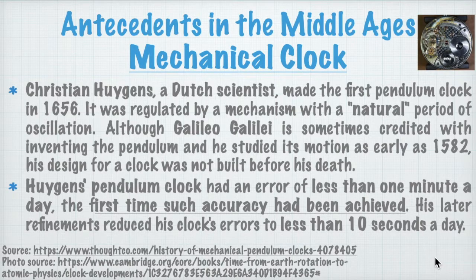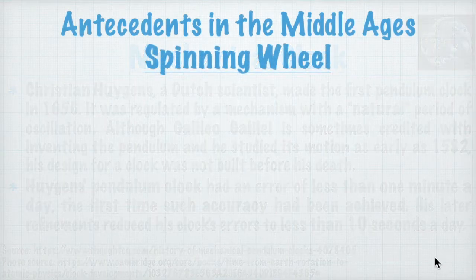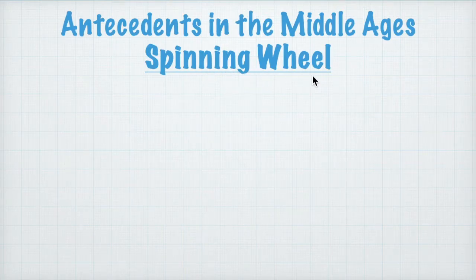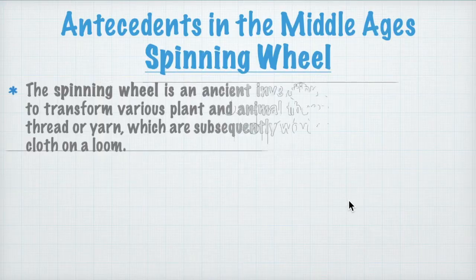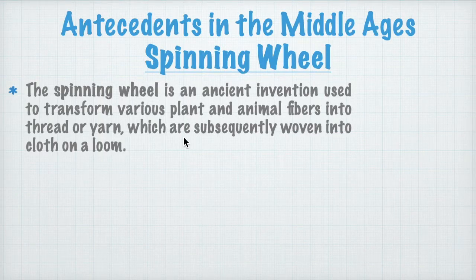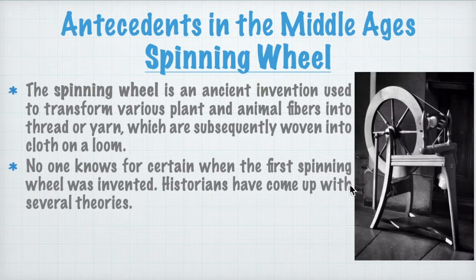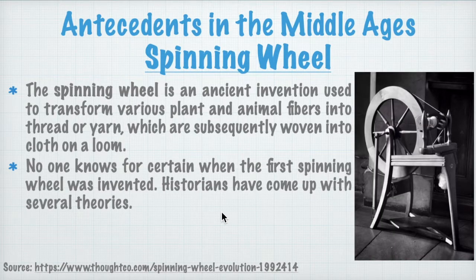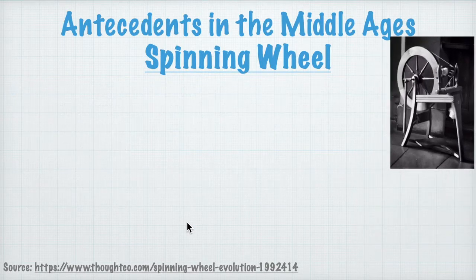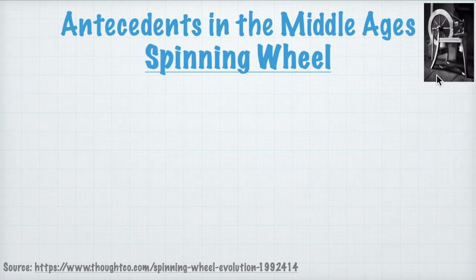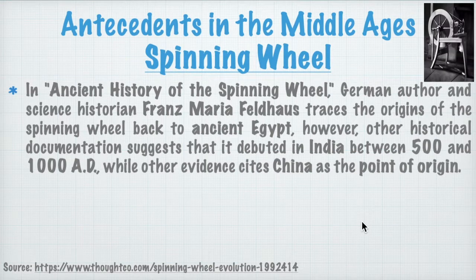The last antecedent in the middle ages is the spinning wheel — an ancient invention used to transform various plant and animal fibers into thread or yarn. No one knows for certain where or when the first spinning wheel was invented, and historians have come up with several theories. You're probably familiar with it from fairy tales like Sleeping Beauty, where it is used as an icon — that story coming from a Brothers Grimm tale.